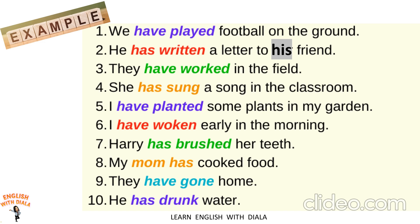He has written a letter to his friend — 'has' for 'he', and 'written' is the past participle form of the verb. Also: They have worked in the field. She has sung a song in the classroom. I have planted some plants in my garden. I have woken early in the morning. Harry has brushed her teeth. My mom has cooked food. They have gone home. He has drunk water.